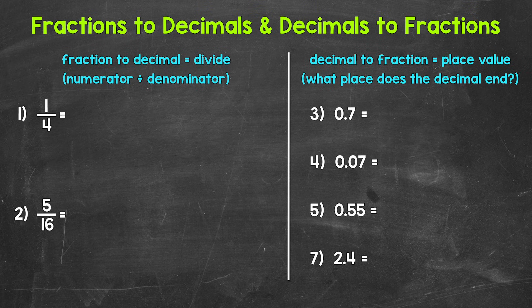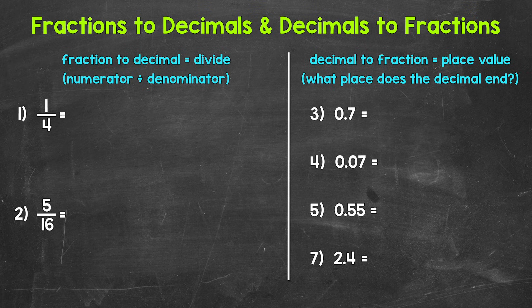Let's start with fractions to decimals, starting with number one, where we have one-fourth. When we go from fractions to decimals, we can divide the numerator — the top number — by the denominator — the bottom number. So here we need to do one divided by four. Remember, fractions are a representation of division, and if we do the division we get the decimal form of the fraction. They are equal — one form is just a fraction and the other a decimal.